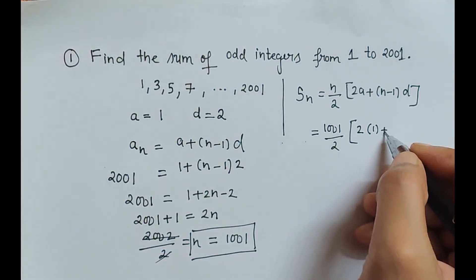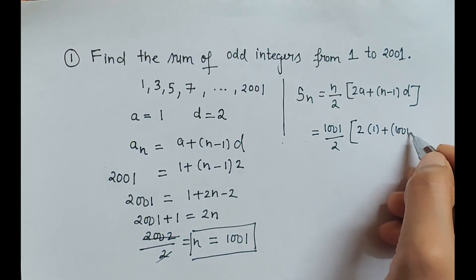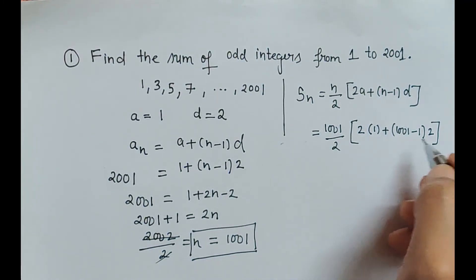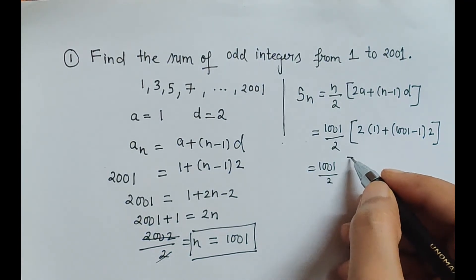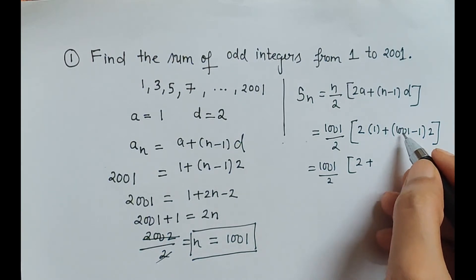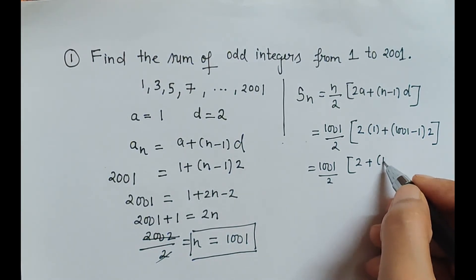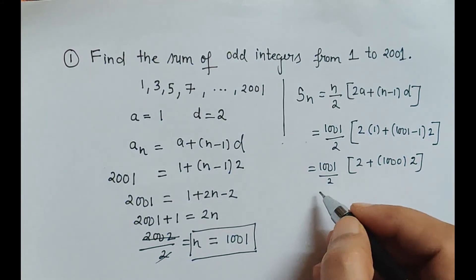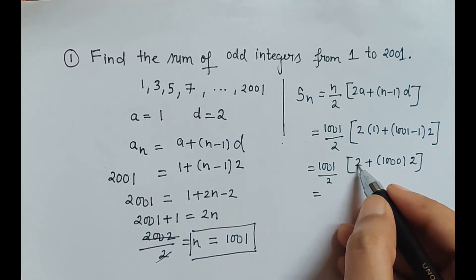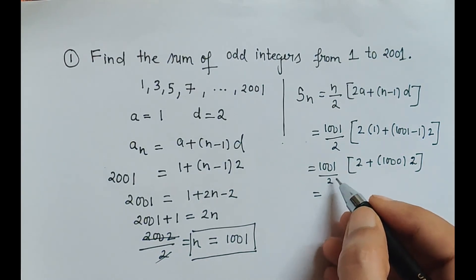So let's substitute the values here. n is 1001 upon 2, then 2 times a is 1 plus again 1001 minus 1, common difference is 2. So here again 1001 upon 2, 2 plus 1001 minus 1 is 1000 into 2. So here also we can take out 2 common which gets cancelled with this denominator.